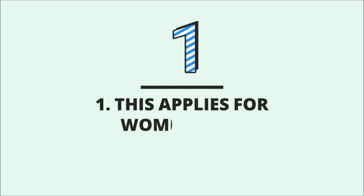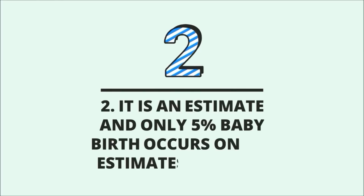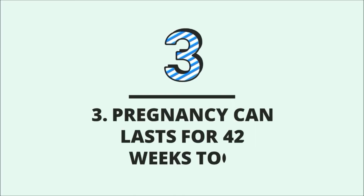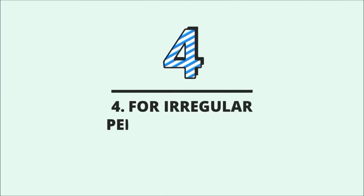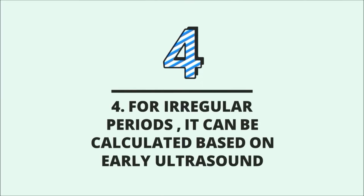This applies for women having regular menstrual cycles. Also, this is just an estimate — only five percent of babies are born on the estimated due date. A pregnancy can last up to 42 weeks. If your periods are irregular, meaning not monthly, then the due date can be calculated based on an early ultrasound done during the first trimester.